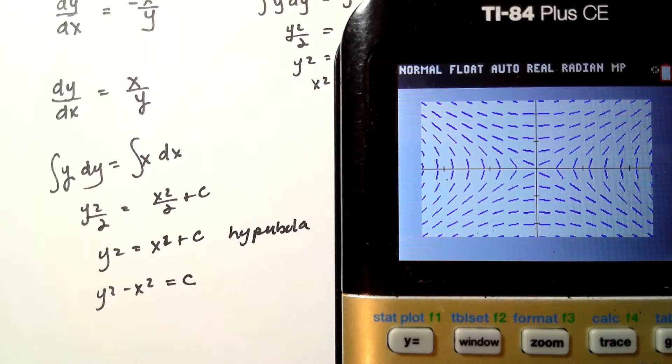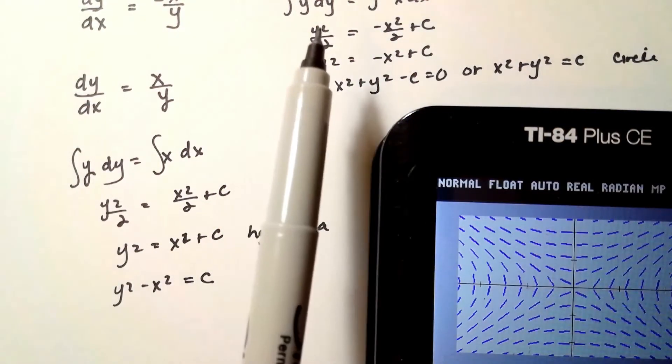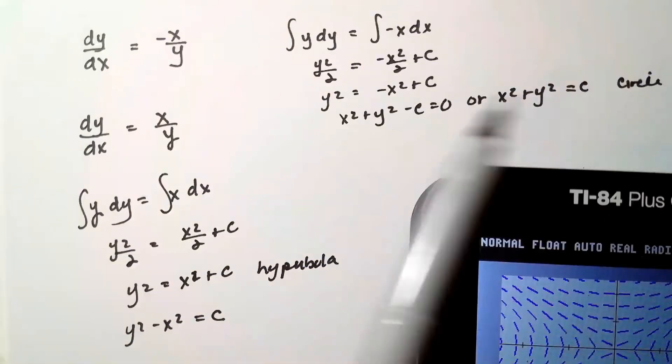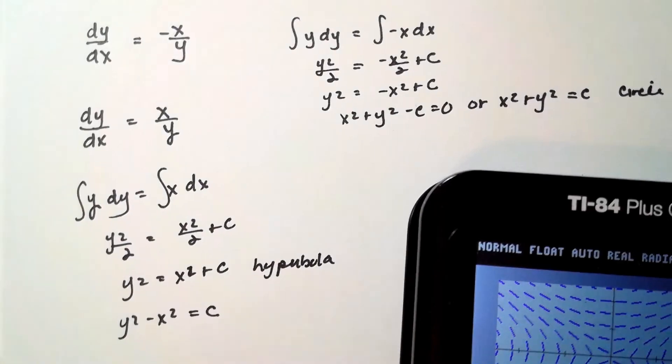So anyway, in the event that you get a picture of a slope field, all you have to really do is just separate the variables, integrate, and try and figure out what the equation was.